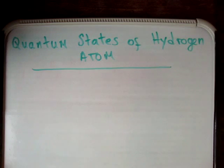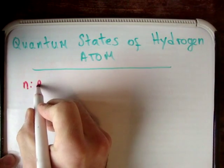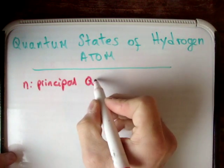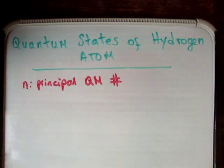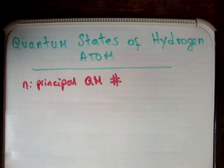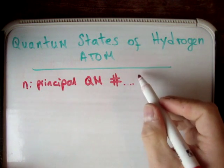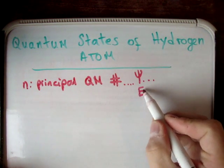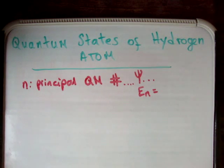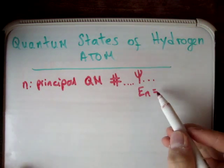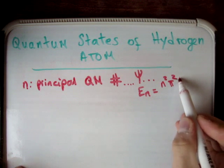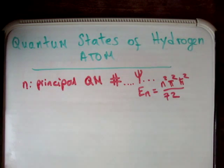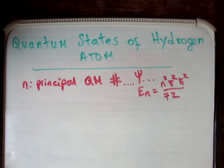We're going to define N as the principal quantum number. The principal quantum number N allows you to get the energy levels — the actual energy in electron volts. Looking at the solutions to the Schrödinger equation, you get your wave equation and your energy levels E sub n. For example, in the infinite potential well, you get an energy that looks like n squared pi squared h-bar squared over some denominator. By changing the integer values of N, you're able to get higher and higher energy levels.